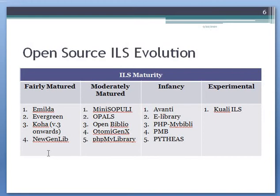Regarding open source ILS evolution and how software is becoming more mature: fairly matured systems include EMILDA, Evergreen, Koha version 3 onward, and NewGenLib — these are very mature ILS systems. Moderately matured but less in use are MiniOpolis, OPALS, OpenBiblio, PhpMyLibrary. Some open source ILS systems are at infancy level but have huge potential for future use, such as PMB, Pytheas, E-Library, and Avanti.